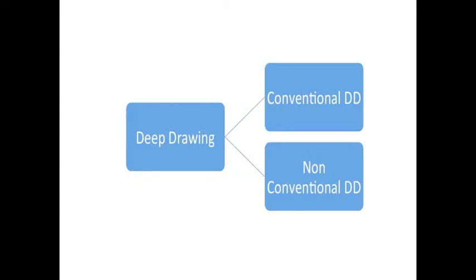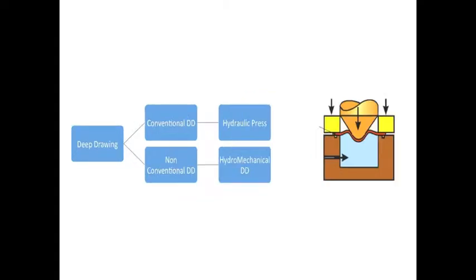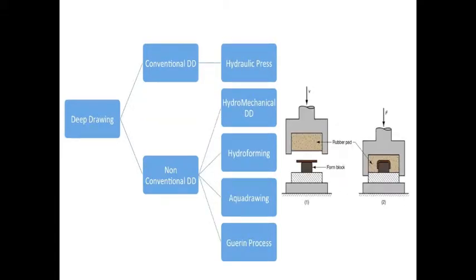The formability limitations of conventional deep drawing are a barrier for some industrial users. To overcome this, different methods are used: hydromechanical deep drawing, hydroforming, aqua drawing, the Guérin process and the Marform process.